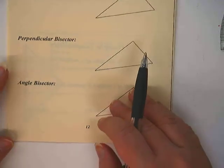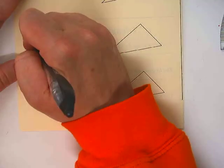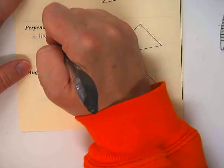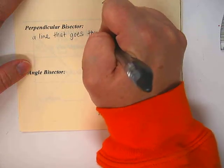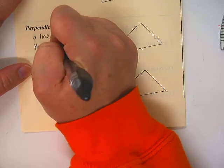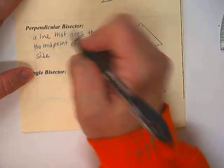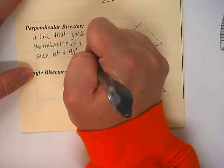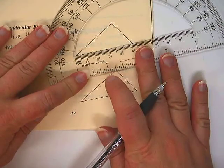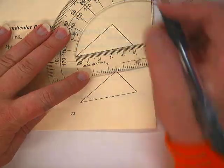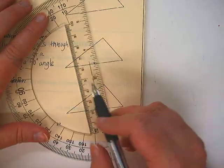Let's go ahead and review the two that we should already know. A perpendicular bisector is a line that goes through the midpoint of a side. That's the bisector part of it, at a 90 degree angle. That's the perpendicular part of it. So first thing we need to do is find the midpoint. I'm just going to estimate by measuring. So that's five centimeters, so like two and a half centimeters would be the midpoint.